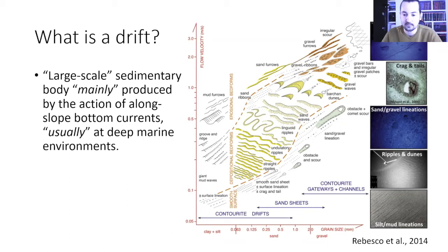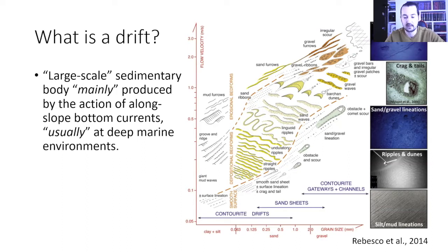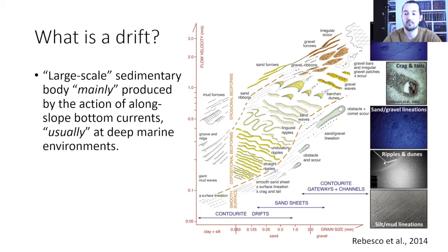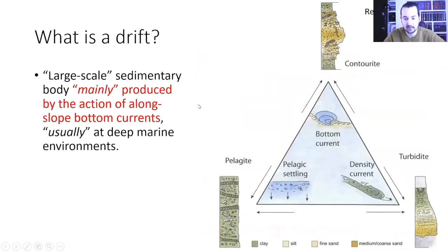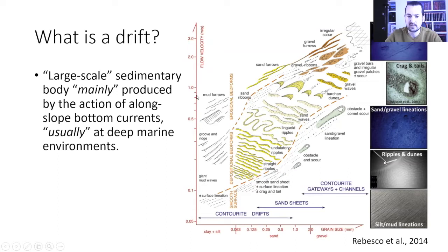I used 'mainly' and 'usually' because there are some exceptions. It's a large-scale sedimentary body because every current produces different sedimentary structures — from ripples to mega-ripples, dunes, and sand waves with increasing energy. A drift is a sedimentary body that may be composed of these different structures, so we may find dunes or sand waves inside a drift. It should be something larger, at least visible at the seismic scale, but they can also be smaller as seen in this figure with many bedforms, extracted from Rebesco et al. 2014.